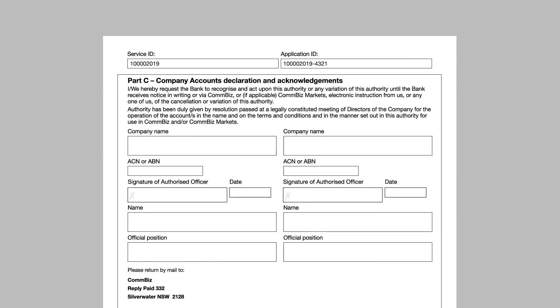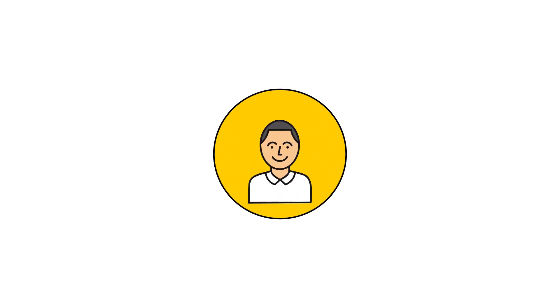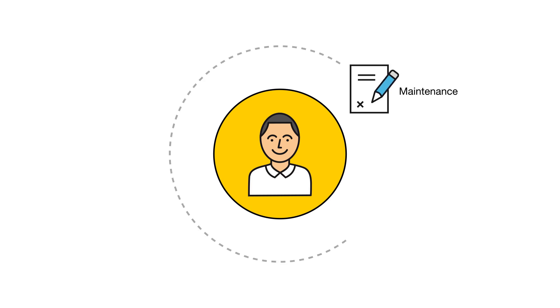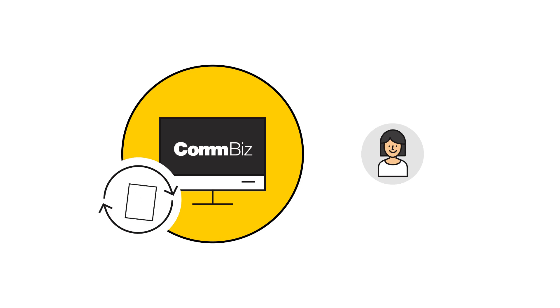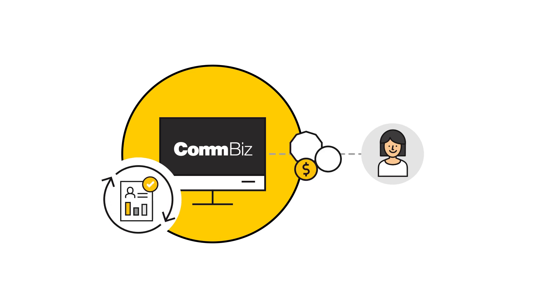Part C must be signed by the owners of the account. The signatures required will vary depending on the account owner type. When all the necessary signatures have been obtained, the administrator can scan and send the maintenance request form and any completed certified copies forms to the bank. Once the maintenance request has been processed, the account will be accessible on ComBiz and the selected authorisers will be able to approve payments on the account.